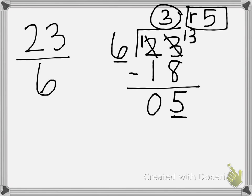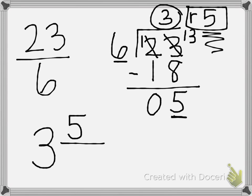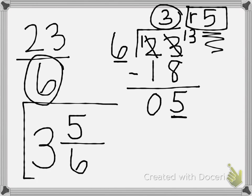Our quotient 3 is now our new whole number in our mixed number. Our remainder 5 is going to become our new numerator in our fraction of our mixed number. Our denominator is going to stay the same — it's going to be 6, just like it was in our original fraction greater than 1. So 23 sixths turns into the mixed number 3 and 5 sixths.